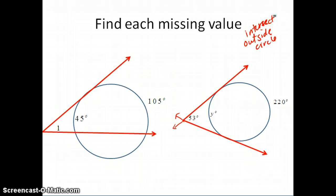When they intersect outside the circle, instead of finding their average, you notice that this angle is much smaller. It's not an inscribed angle because again it's not inside, it's outside. So it can't be half of the 105, and it can't be half of 45. So when it intersects outside, to find angle 1, I'm actually going to call it x just so I don't get confused with numbers.